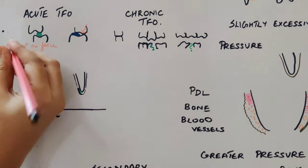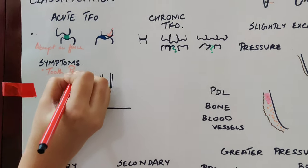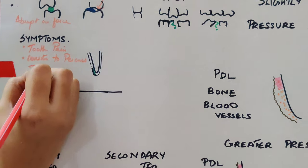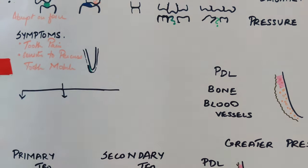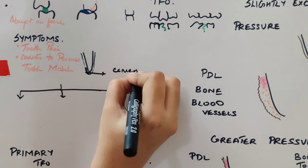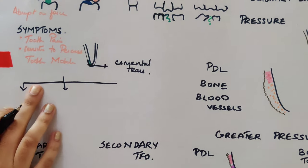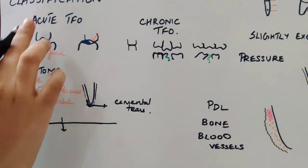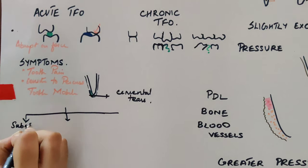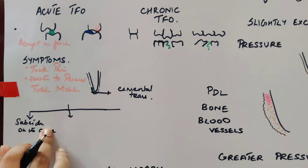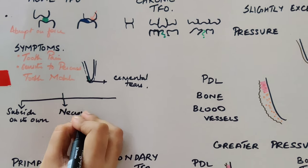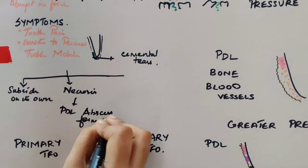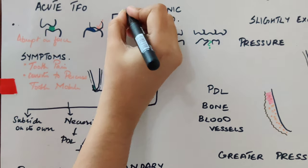The symptoms of acute TFO include tooth pain, sensitivity to percussion, and tooth mobility. There may also be cemental tears. If the force is dissipated by a shift in tooth position, acute TFO can subside on its own. However, if it persists, it could lead to necrosis and periodontal abscess formation, or it may transition into a symptom-free chronic TFO condition.